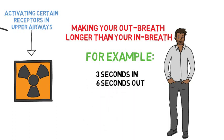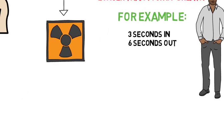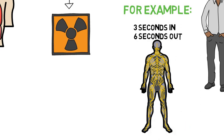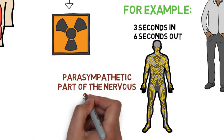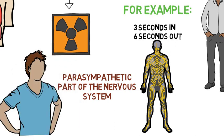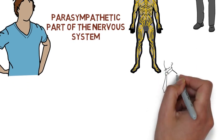You see by making the out breath longer than the in breath you are activating the parasympathetic part of your nervous system and that is the part that is responsible for calming your whole system down. Of course it takes a bit of effort to remember to do this on a regular basis but it can be truly helpful.